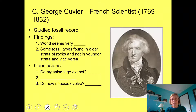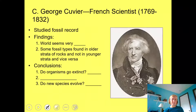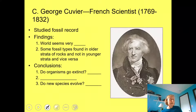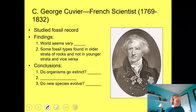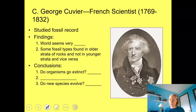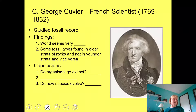Another researcher living in the 1700s, George Cuvier, focused on studying fossils — impressions of organisms that lived in the past, most often found in sedimentary rock. There weren't a lot discovered yet in the 1700s and early 1800s, but people were really starting to find them. As Cuvier studied these fossils, he concluded that the world seems really old. He also noticed that some fossil types are found in younger layers of the rocks, and some are found in only the older layers, but not vice versa.